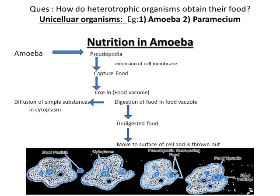With the help of pseudopodia, Amoeba takes in food particles inside the food vacuole. In the food vacuole, digestion of food takes place. After digestion, diffusion of simple substances into the cytoplasm occurs, and undigested food is moved out of the cell through the general body surface. In the diagram you can see: first, Amoeba with food particles; Amoeba bears finger-like pseudopodia, engulfs the food inside the food vacuole where digestion occurs, then absorption, and leftover material is excreted out through the general body surface.